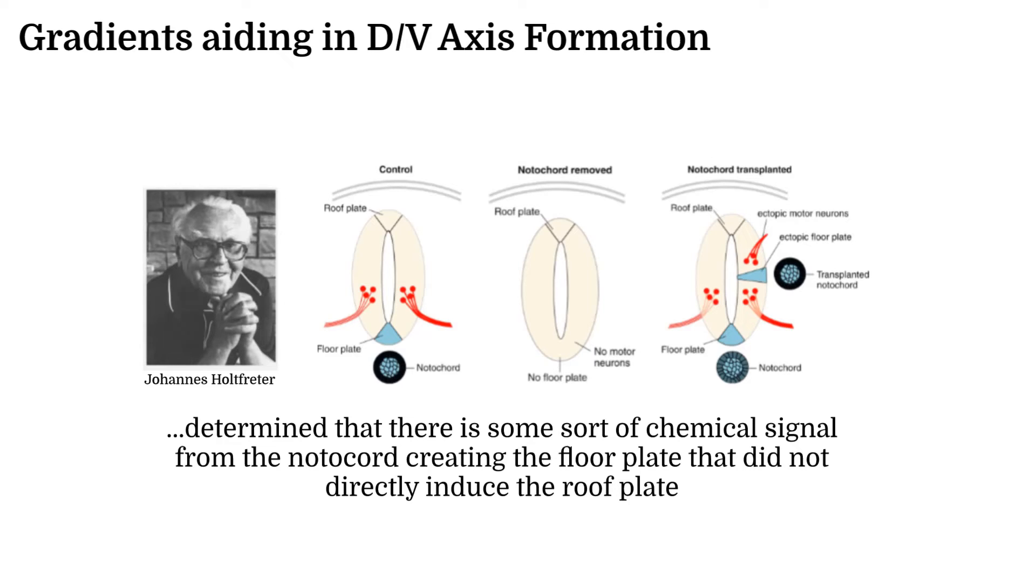Thus, it can be concluded that at least for the floor plate, its formation is induced by some chemical signal by the notochord and that the notochord does not have any direct connection with the formation of the roof plate.